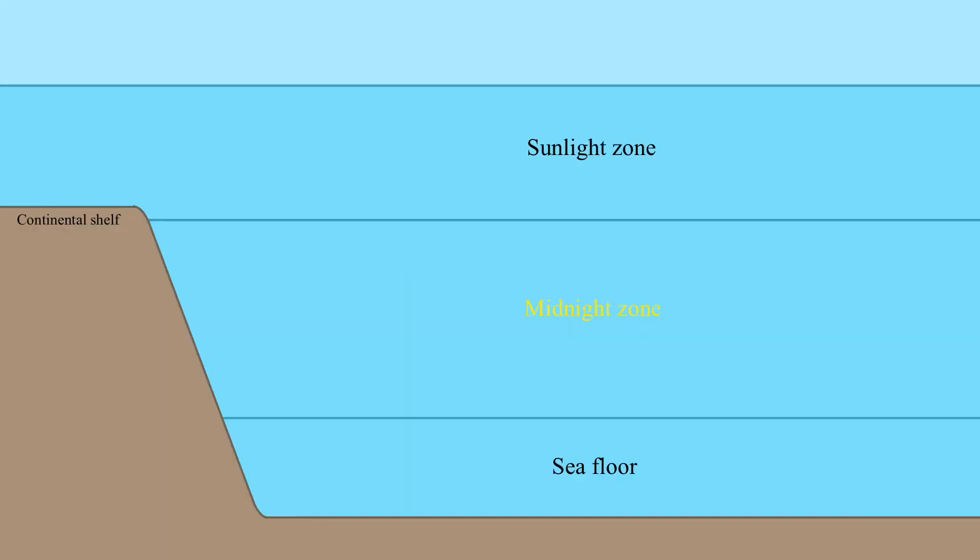As the ocean gets deeper, the animals get more pale and more frightening. The main source of nutrients at these depths is marine snow, and little to no light reaches these depths.